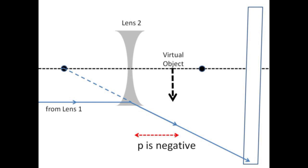For tracing rays, consider a ray from lens 1 heading for the tip of the virtual object. It is then deflected by the diverging lens as though it came from the focal point.